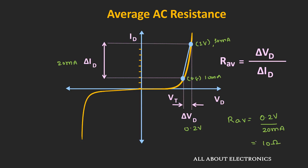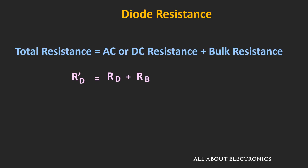When a very large AC swing is applied to the diode, we can find the value of the average AC resistance in this way. Whenever we model the diode, the total resistance is the summation of the AC or DC resistance plus the bulk resistance — the resistance offered by the semiconductor material used for construction. The value of bulk resistance is very small and for most practical cases can be neglected.